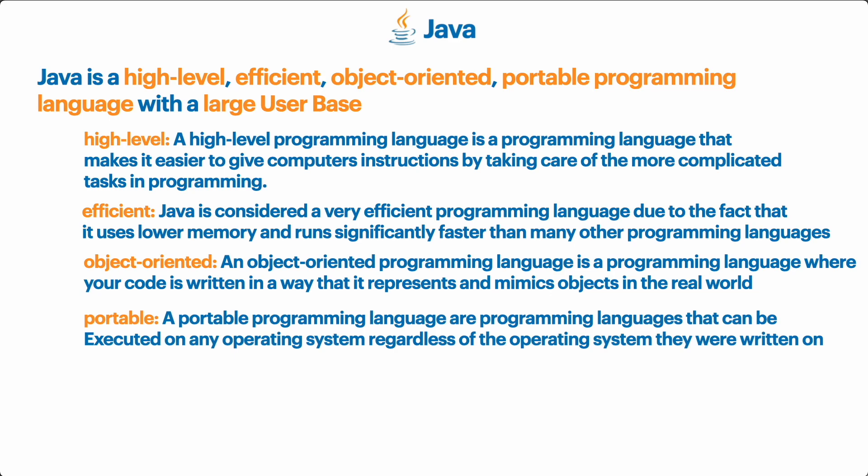Now, 'portable.' A portable programming language is one that can be executed on any operating system, regardless of the operating system it was written on. Java is a portable programming language because it doesn't matter where you wrote your Java code or where you're running it — as long as there are no errors in your code, it'll run on any machine. That's why it's portable: you can take it from one machine to another without any problem.